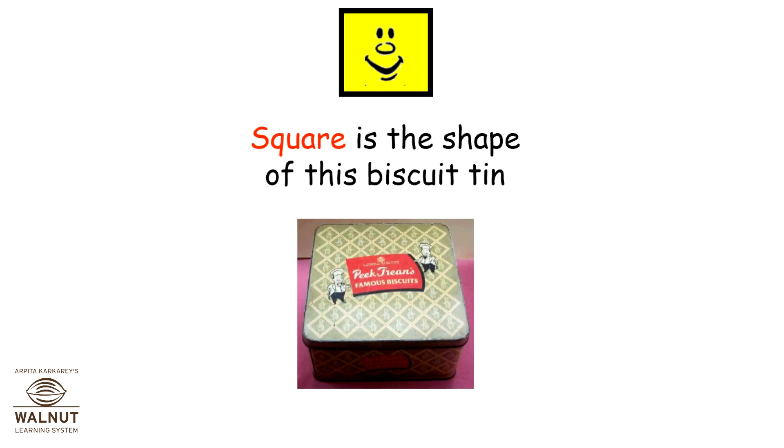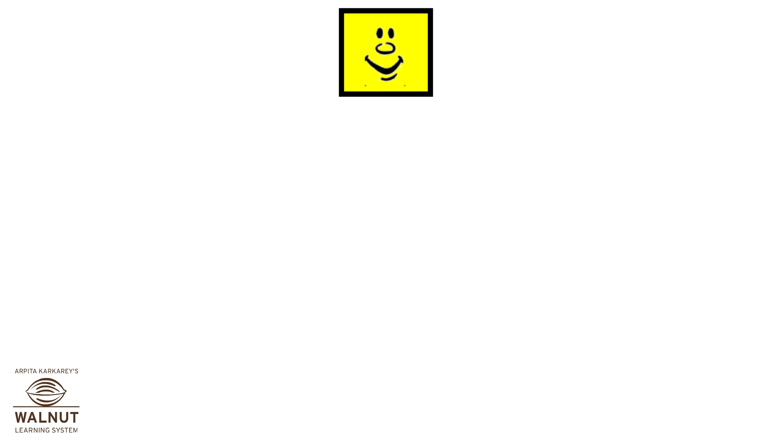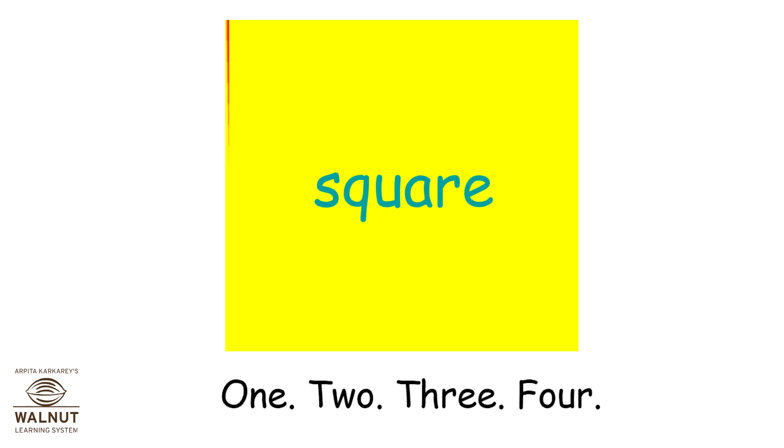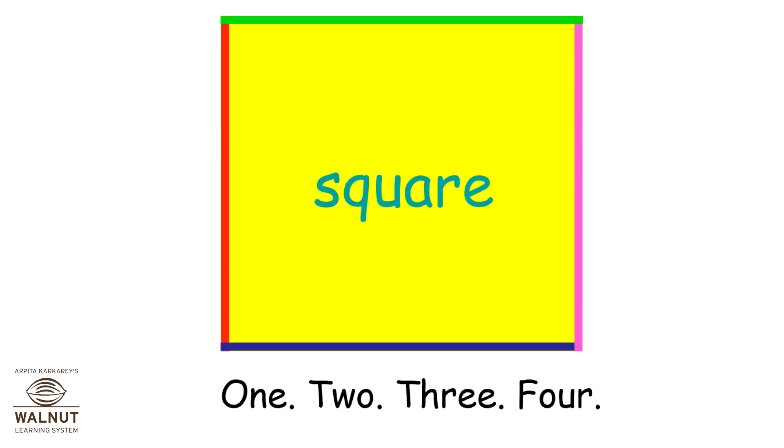Square is the shape of this biscuit tin. Square is the room that you are in. One, two, three, four.